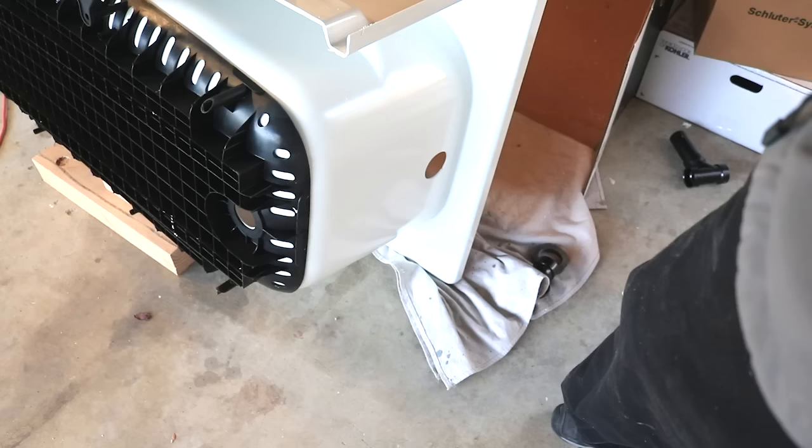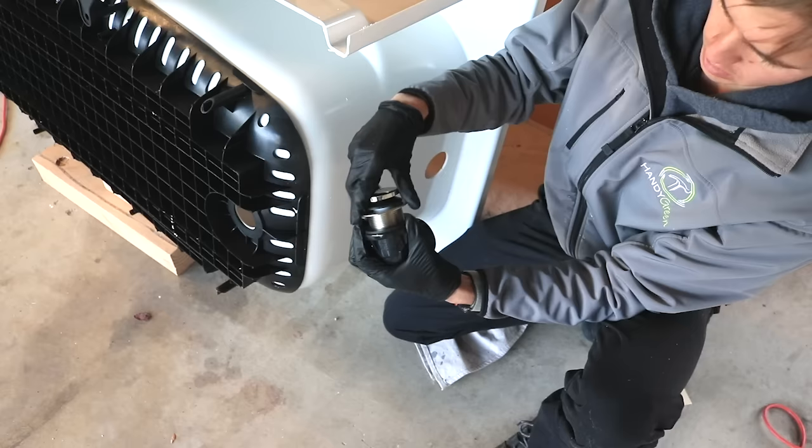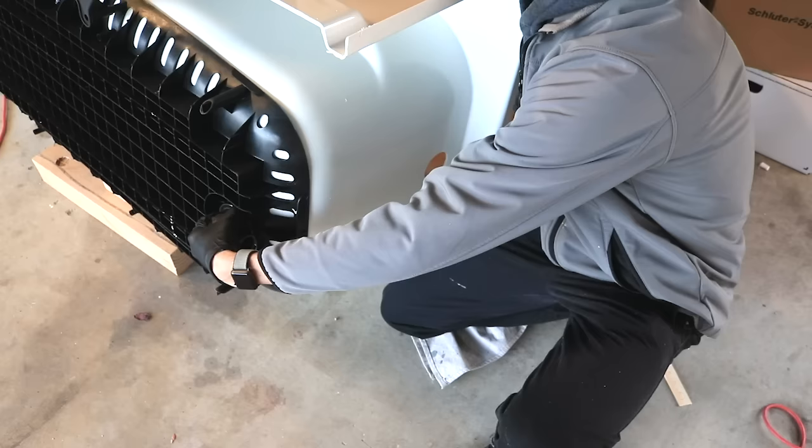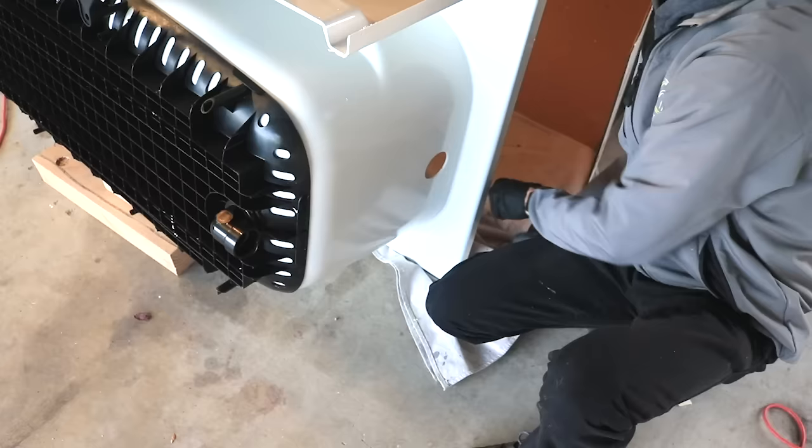Once the tub has been successfully test fitted it's time to build the drain assembly. Start out by installing the drain onto the tub and then the overflow drain. If you'll be setting your tub in a bed of mortar and connecting the plumbing from underneath then you'll want to use a sealant to permanently attach the drain assembly right now. However, that's not what I'll be doing in this video.